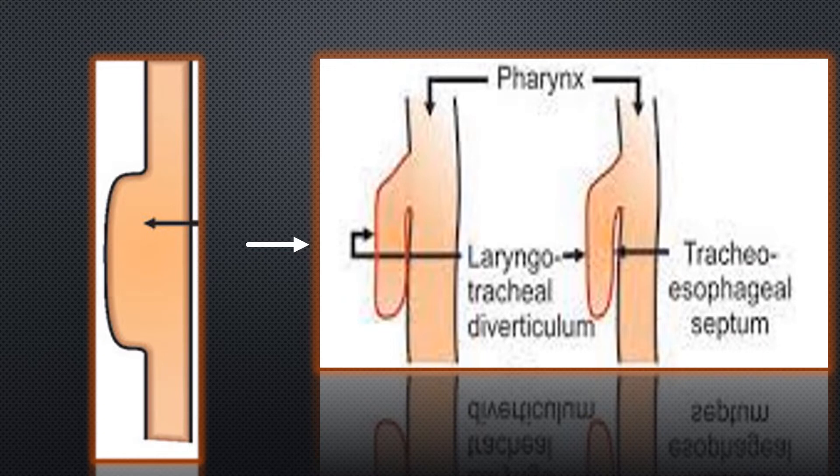Development of trachea occurs in the ventral wall of the foregut. This is the foregut tube. During fourth week, a median groove is arising from the ventral wall of the foregut. This median groove is called laryngotracheal groove and it is also called respiratory diverticulum.